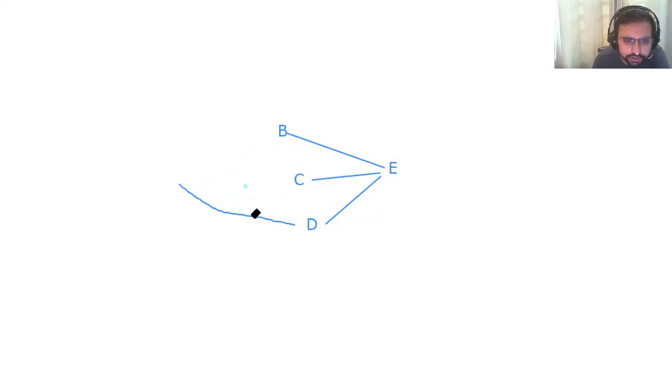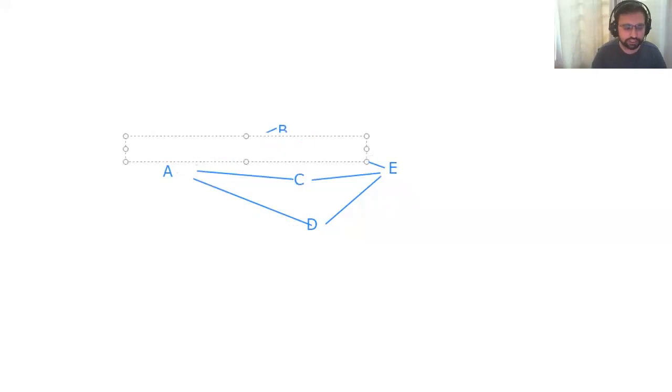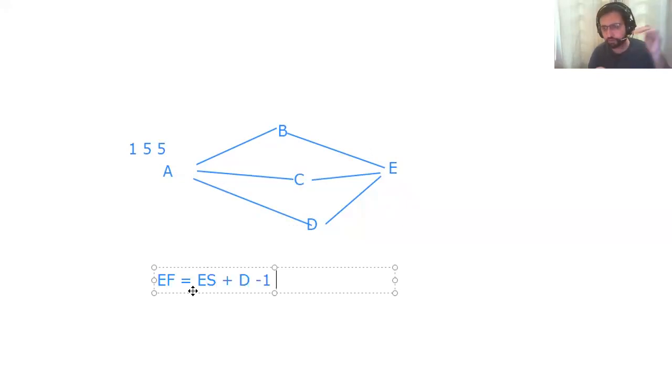We have made the critical path. It does not look beautiful to me, so I'm going to erase this and use straight lines. Comparatively better. Activity A. So now the duration of A was five. And we know that the first activity starts on day one. Duration is five. The formula for early finish is equal to early start plus duration minus one. And you're moving forward first.